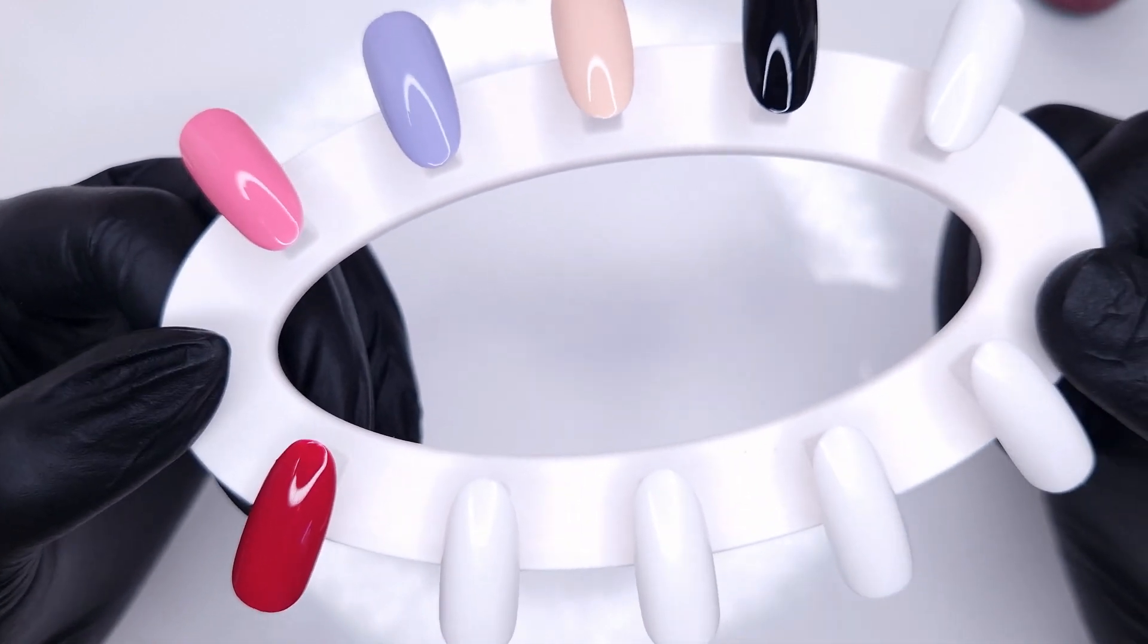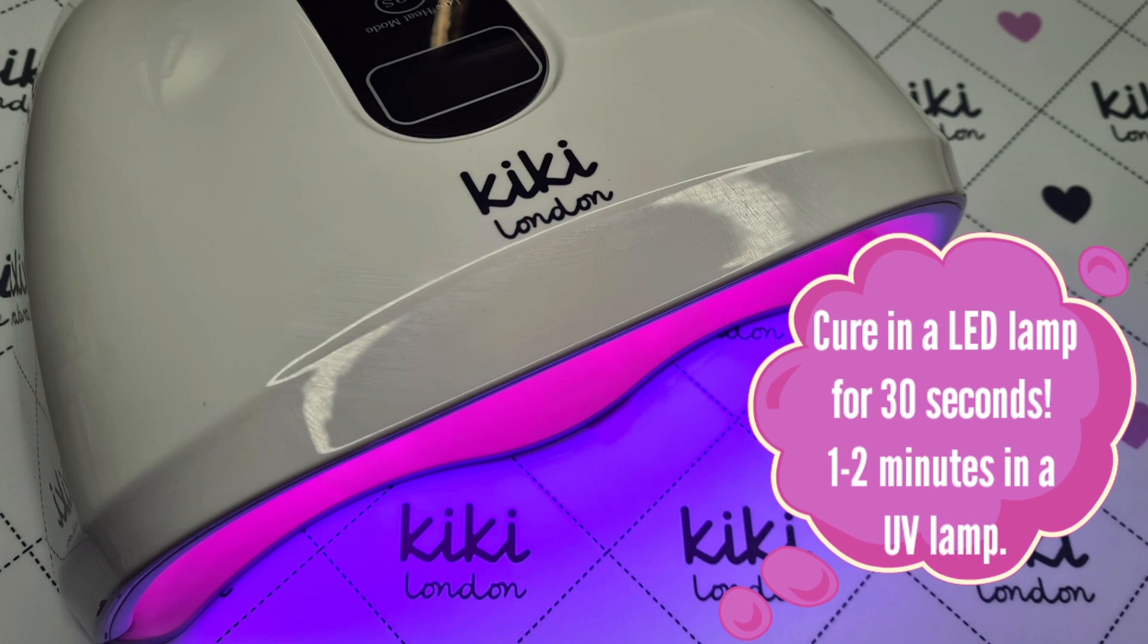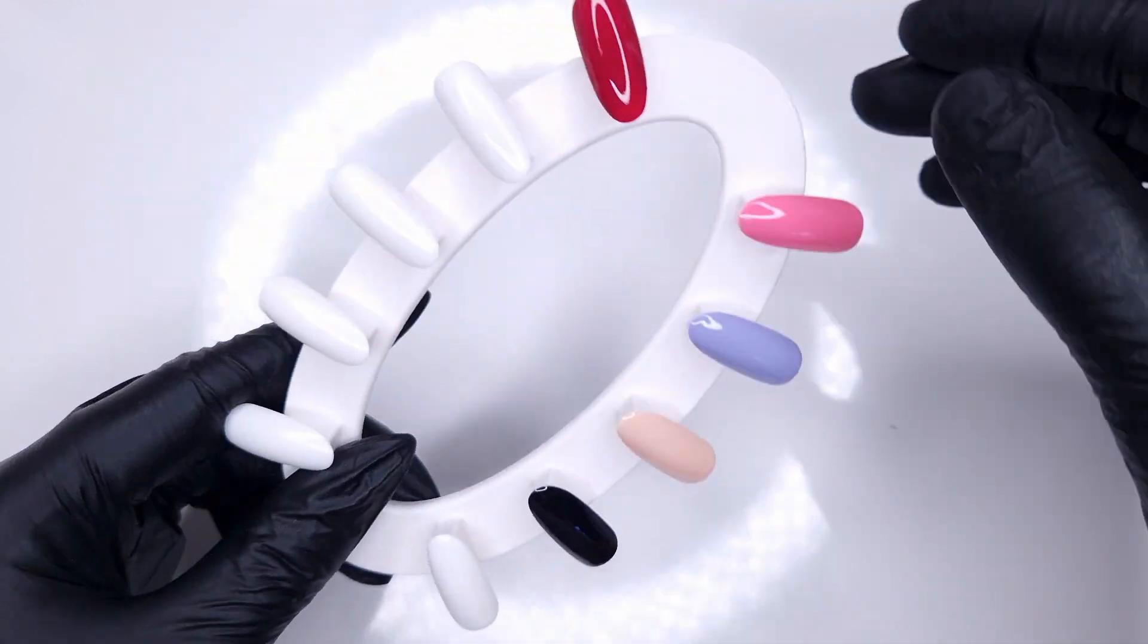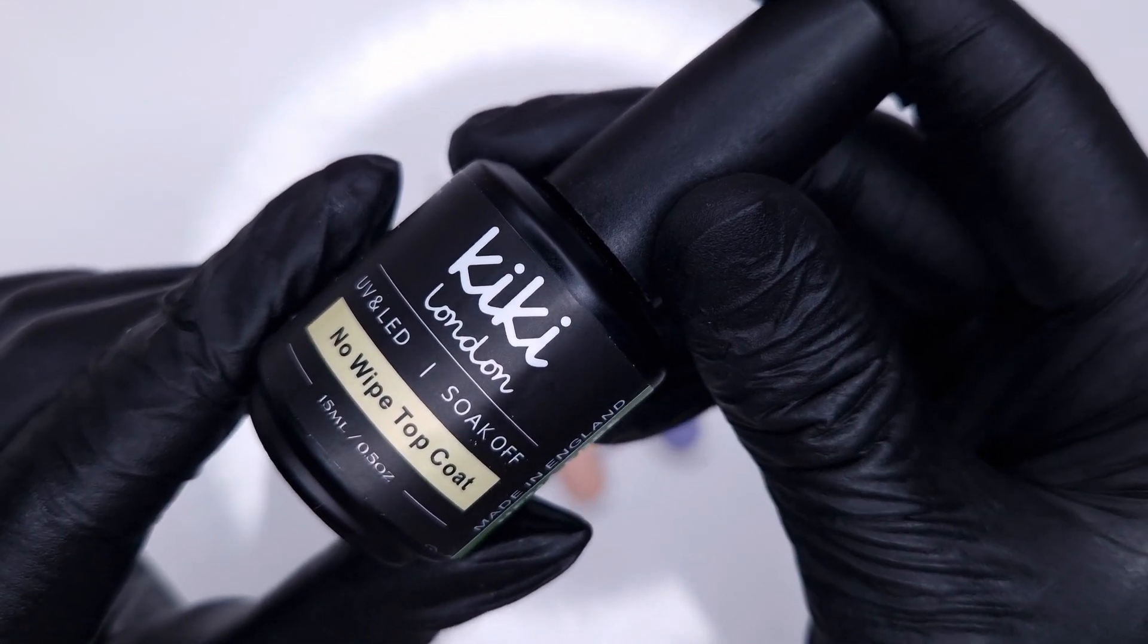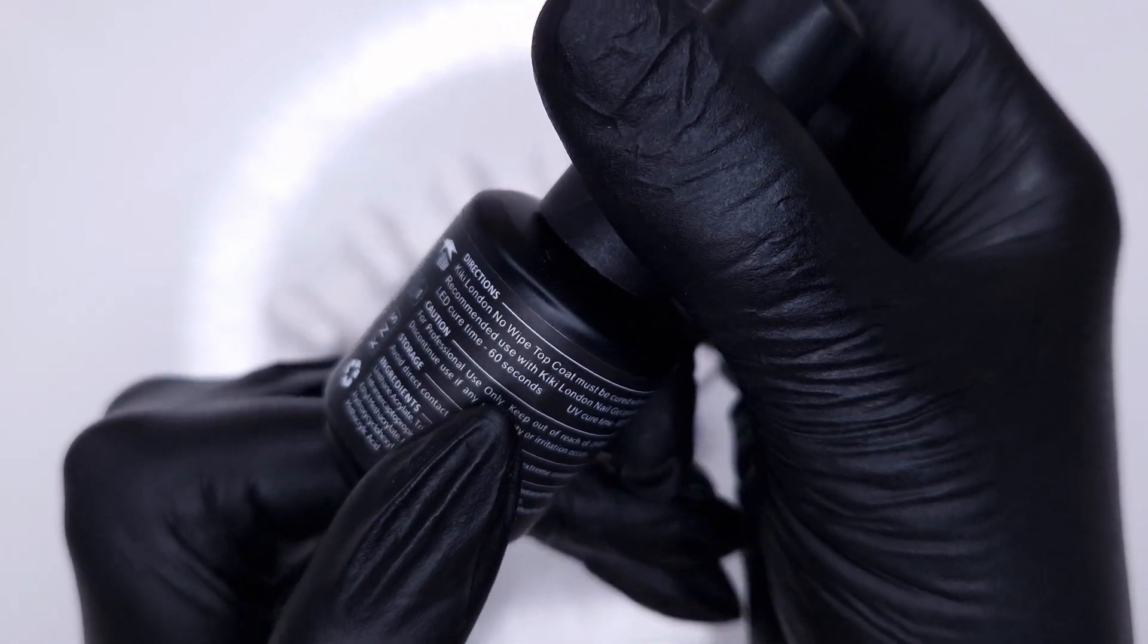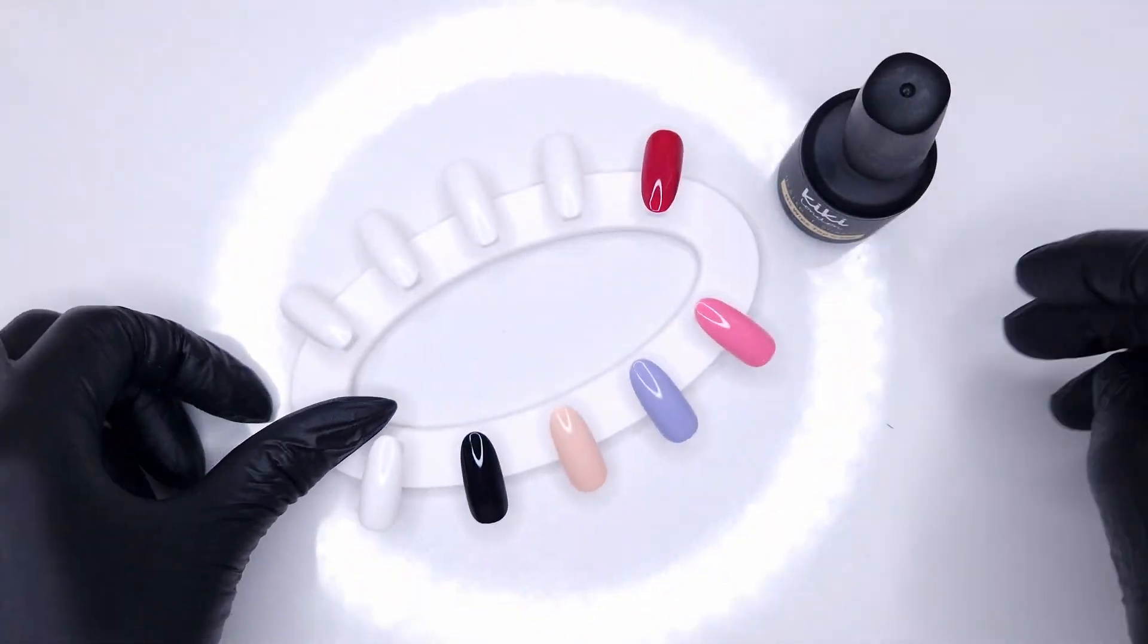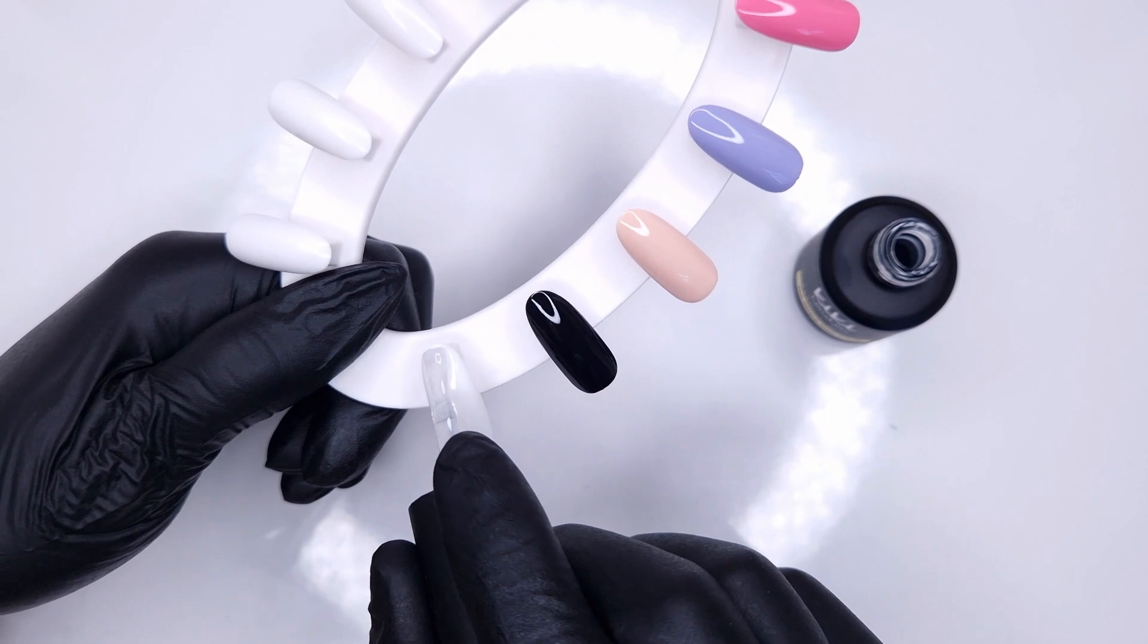So this is what those colors look like now that we've got all of the second coat applied so we're going to pop those in to cure for 30 seconds as well and just look how gorgeous these shades look. Now something I did want to mention is initially as you can see here we have six shades, there will be more colors coming to the Hema Free range. As always follow the Kiki London Instagram page as that's where lots of updates go.